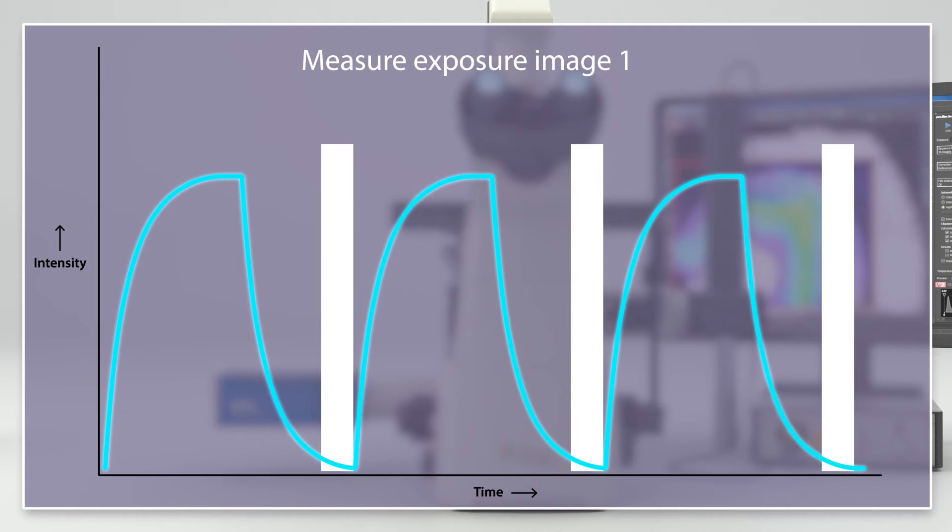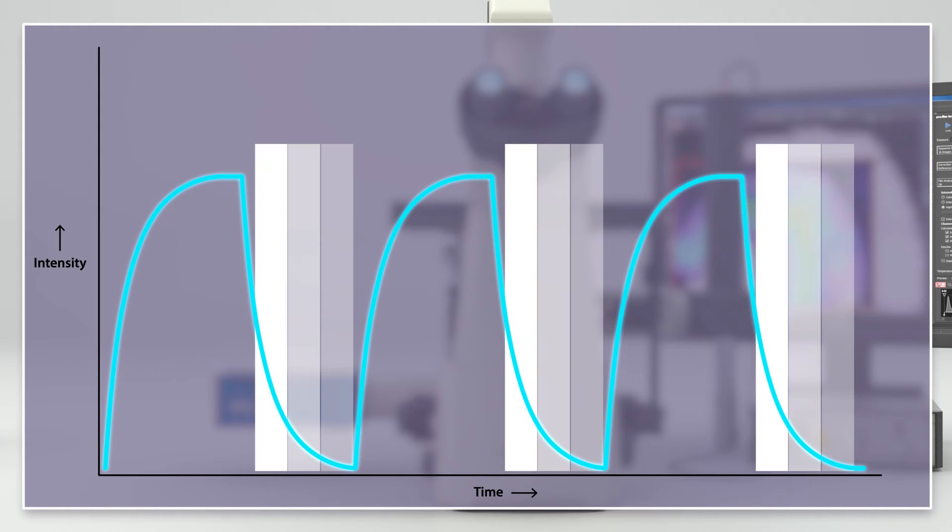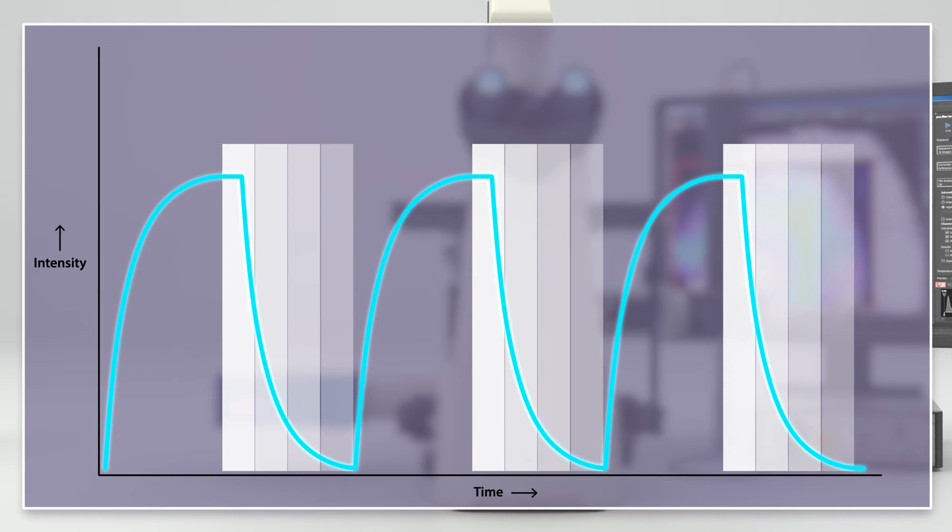Repeatedly integrating over the same narrow section of the decay curves leads to the first image. Then, the integration interval is slightly shifted to integrate over another section of the decay curves giving the second image. This section wise integration is repeated until the whole decay curve is sampled.